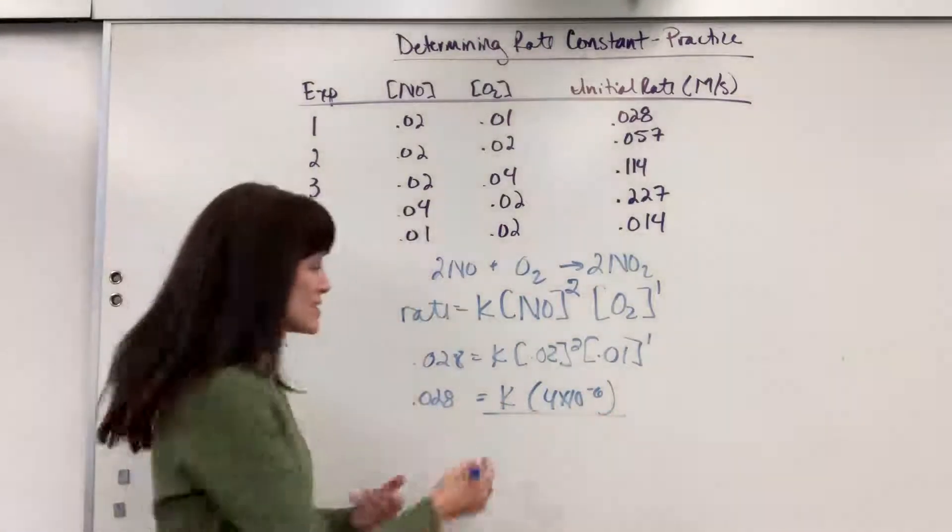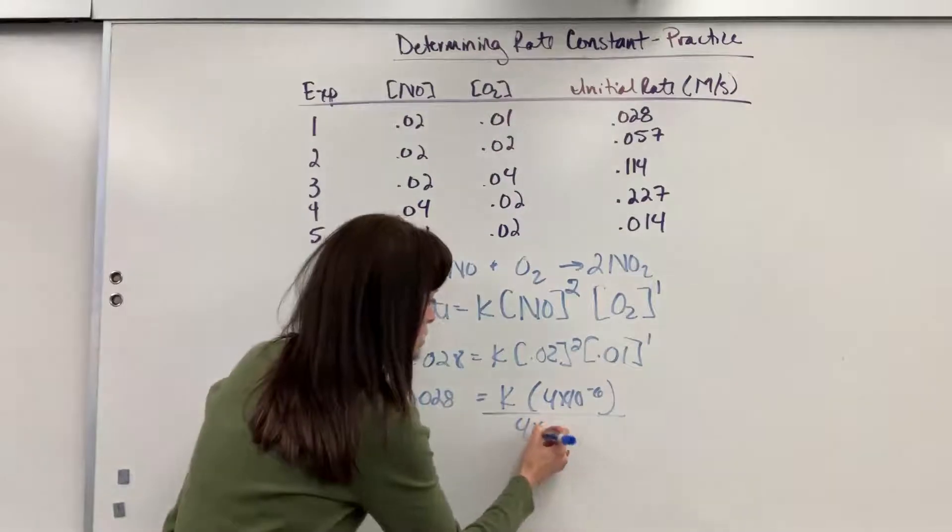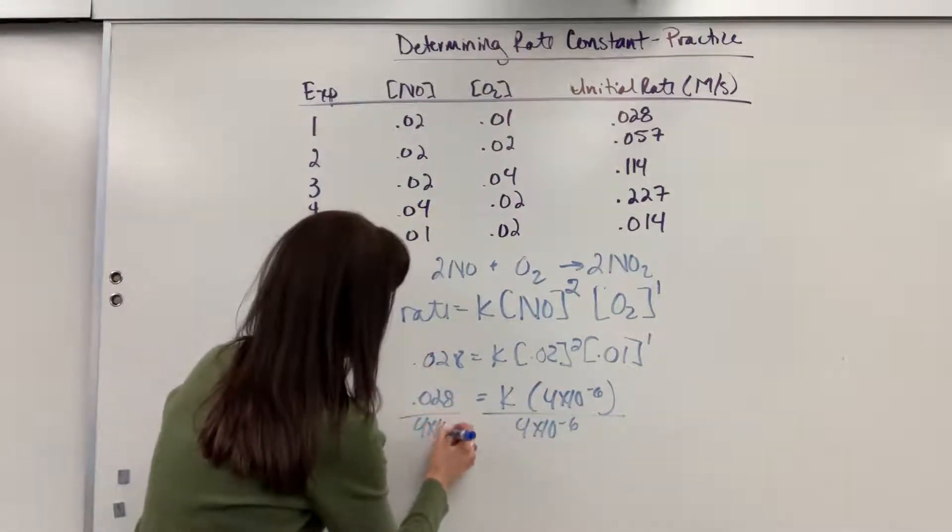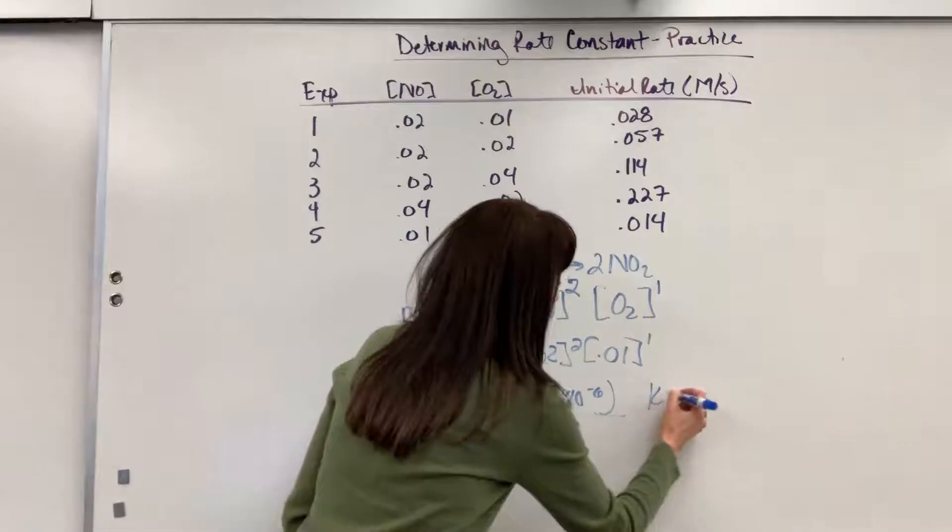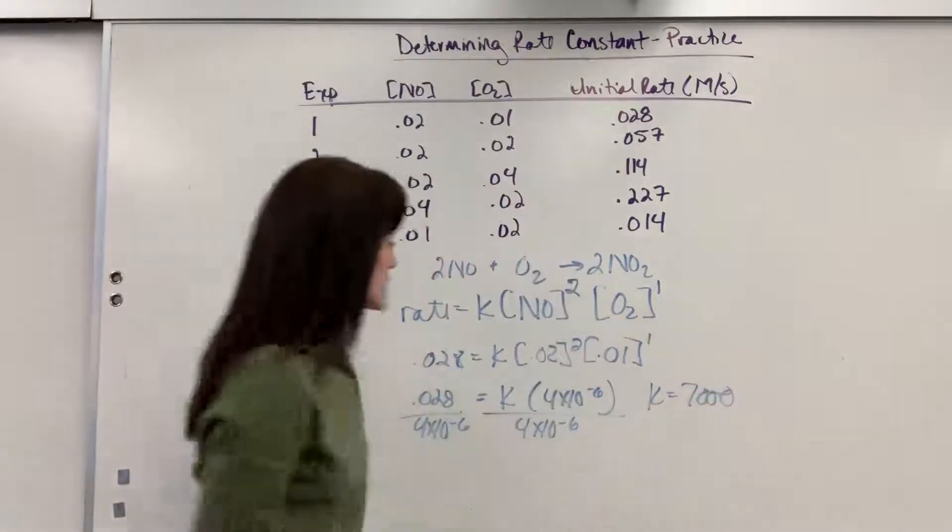So just a little bit of algebra. Let's divide both sides by 4 times 10 to the minus 6, and K will equal 7,000.